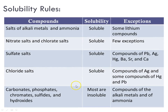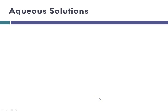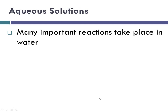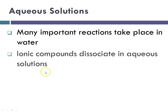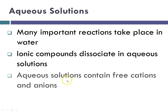Now, in the case of a precipitate forming, the way we'll know that it's a product that's formed is we'll consult our solubility rules and we'll figure out if something insoluble has formed. And for aqueous solutions, we have to remember many important reactions take place in water. Just about everything that takes place in our body is in water, because we are water-based, and ionic compounds dissociate in aqueous solutions. So that means aqueous solutions contain the free cations and anions floating around. In terms of biology, you can think about the electrolytes that you learned about in biology class that are so important in our bodies.